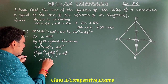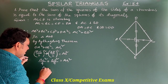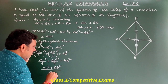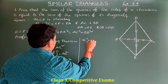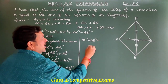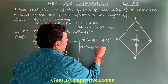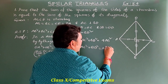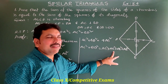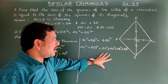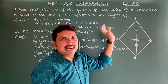So, AC² + BD² = 4·AB². Now, 4·AB² means AB² + AB² + AB² + AB². But in a rhombus, all sides are equal: AB = BC = CD = DA. So we can substitute BC, CD, and DA in place of the four AB² terms.